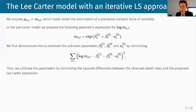This looks a little like linear regression, but it is not, because I do not have an observable covariate on the right-hand side of the expression. The Lee-Carter specification uses parameters — there is nothing that is an observable covariate — so I cannot directly implement a traditional least squares approach.